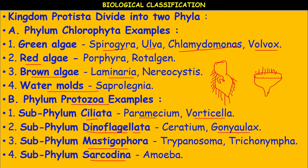Gonyaulax is a red dinoflagellate. It undergoes such rapid multiplication that it makes the sea appear red — red tides are formed by Gonyaulax.